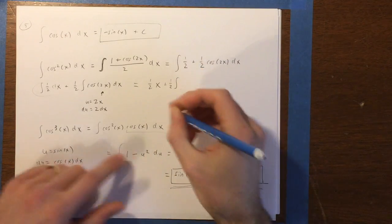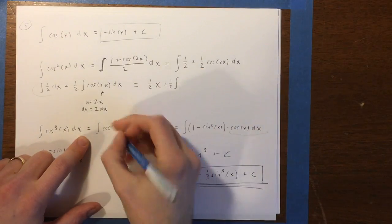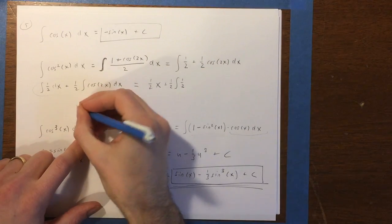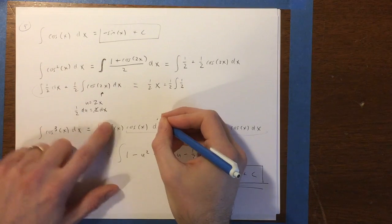So with this u substitution, we're going to get another copy of 1 half, because we have to divide both sides by 2 here to get dx equals 1 half du.